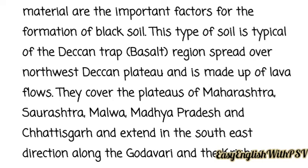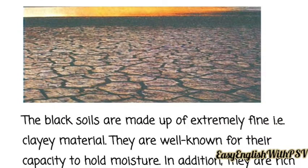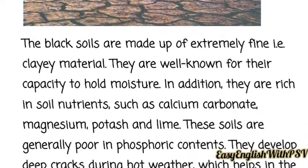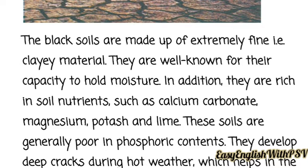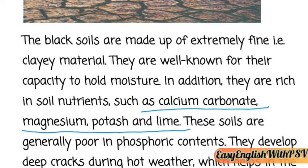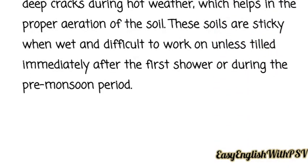Black soils cover the plateaus of Maharashtra, Saurashtra, Malwa, Madhya Pradesh, and Chhattisgarh, and extend in the south-east direction along the Godavari and Krishna valleys. The black soils are made up of extremely fine clay material. They are well known for their capacity to hold moisture for a long time. In addition, they are rich in soil nutrients such as calcium carbonate, magnesium, potassium, and lime. These soils are generally poor in phosphoric contents. During hot weather, deep cracks form, which help in proper aeration of the soil.